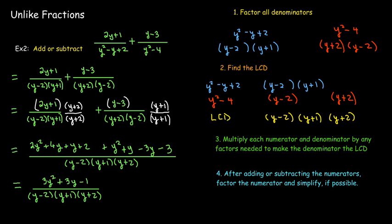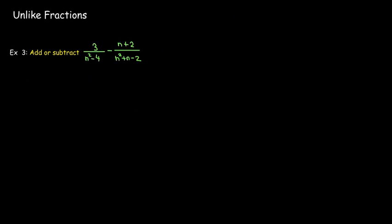Here's another example with algebraic fractions. Let's go ahead and start by factoring all of the denominators and finding the LCD. So n squared minus 4 is n plus 2 times n minus 2. n squared plus n minus 2 is n plus 2 times n minus 1. So the LCD has the three factors, n plus 2, n minus 2, and n minus 1.